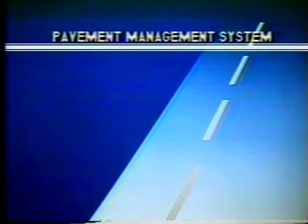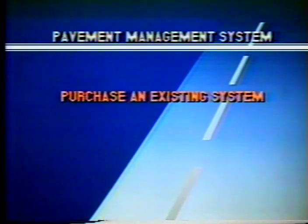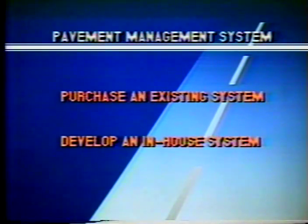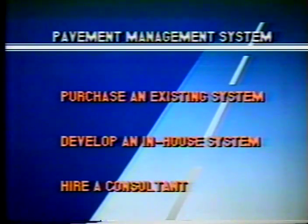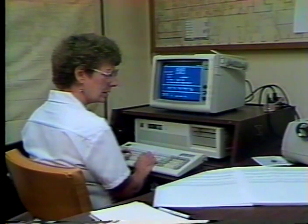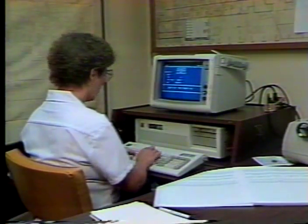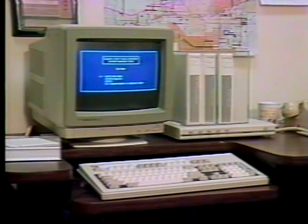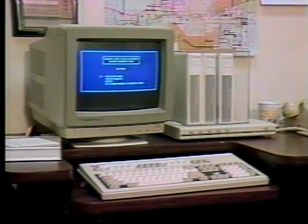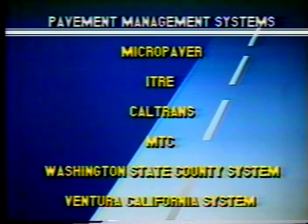A local highway agency interested in implementing a pavement management system has three basic options. An existing pavement management system can be purchased, usually for a nominal fee. Depending on the size and sophistication of the highway agency, a system can be developed in-house. Alternatively, a consultant may be hired to implement a pavement management system. There are advantages and disadvantages to all three approaches. Adopting an existing pavement management system can be the most economical way to get started. Although some pavement management systems lack flexibility, many are written in commercial off-the-shelf software languages such as BASIC, D-BASE, or other database management systems, which can be modified. The Federal Highway Administration maintains a list of public domain and proprietary systems available to local government agencies.